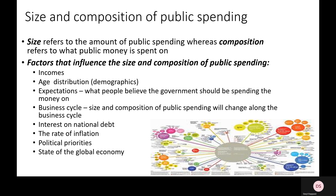Let's think about incomes first. If incomes are falling across the economy — perhaps due to a recession — there could be a greater need for expansionary fiscal policy and more public expenditure to help the economy grow. That might also affect what we spend money on: if incomes are falling, there may be a growing need for increased spending on unemployment benefits and other forms of welfare to guard against poverty.